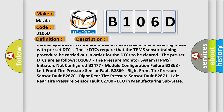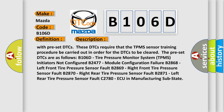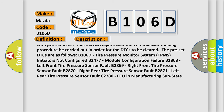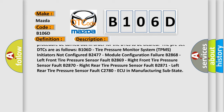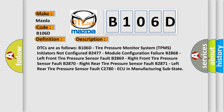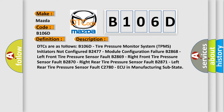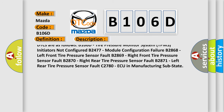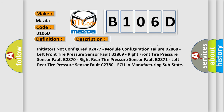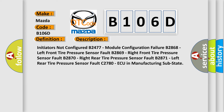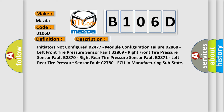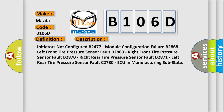The preset DTCs are as follows: B106D — tire pressure monitor system, TPMS initiators not configured; B2477 — module configuration failure; B2868 — left front tire pressure sensor fault; B2869 — right front tire pressure sensor fault; B2870 — right rear tire pressure sensor fault; C2780 — AQ in manufacturing sub-state.